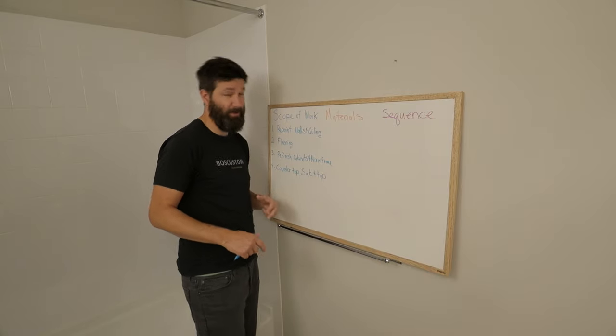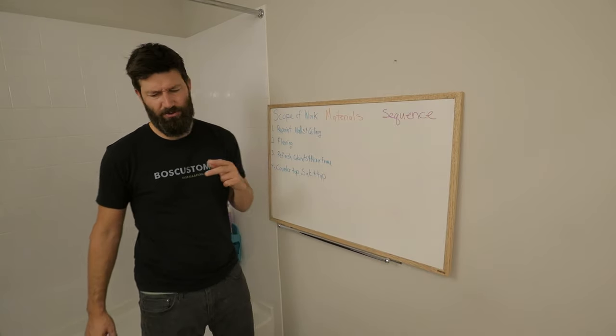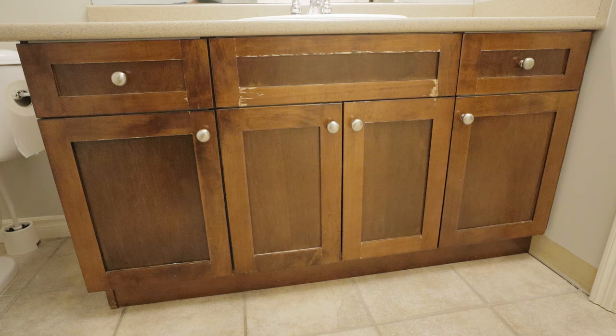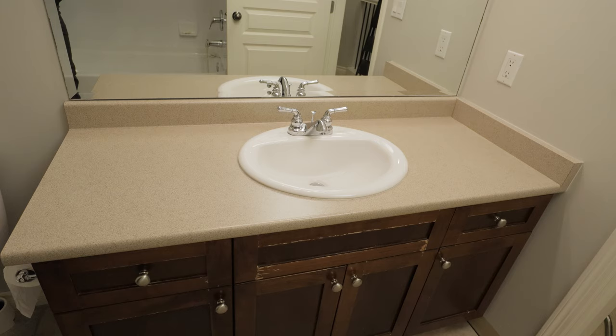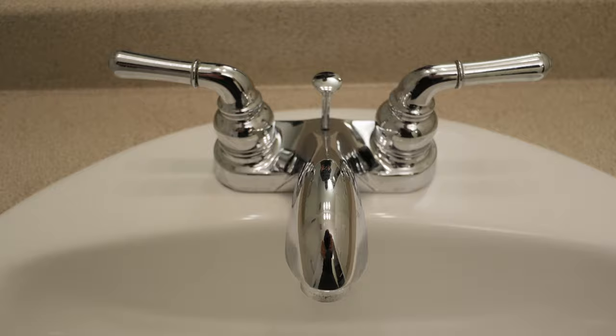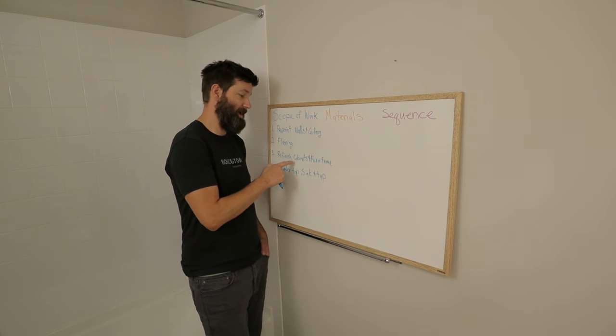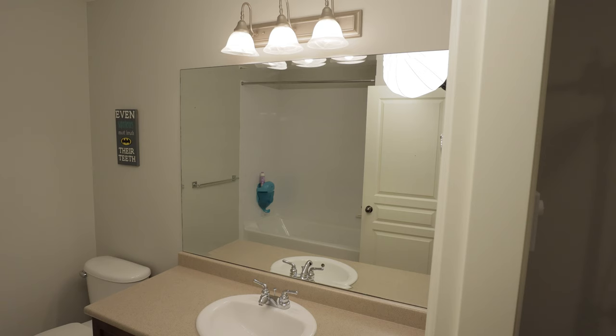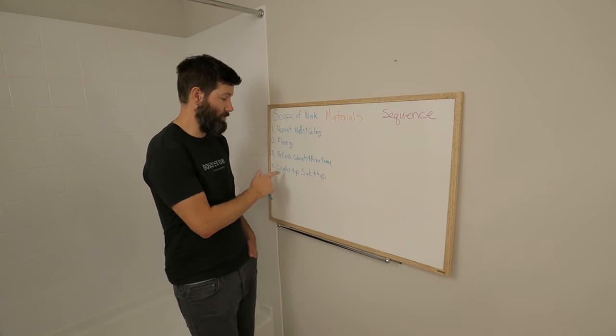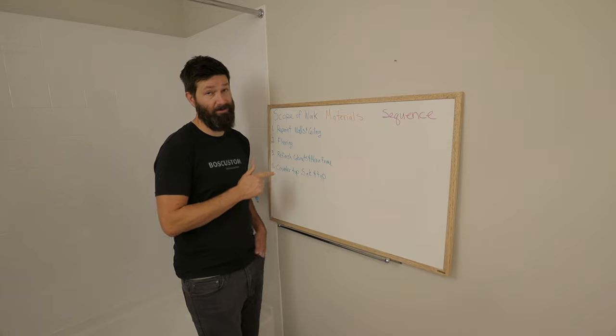So the next things that we need to work on in here is probably the most egregious part of this whole bathroom, and it's the cabinets, the countertop, and the sink and tap. So I'm going to be getting a professional to refinish the cabinets. I'm going to build a frame around the mirror to tie it in with the cabinets, and then we're going to get a new quartz countertop with an undermount sink and tap.